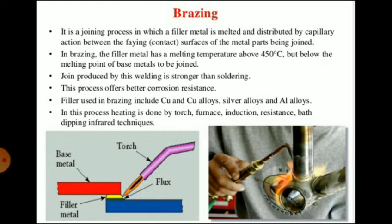For the brazing procedure, the surfaces to be joined are cleaned and fitted closely together. Flux is applied to all surfaces where the filler material is to flow. The joint is heated to the proper brazing temperature, then filler metal is applied to the metal pieces with the help of a blow pipe and allowed to flow by capillary action, then slowly cooled.